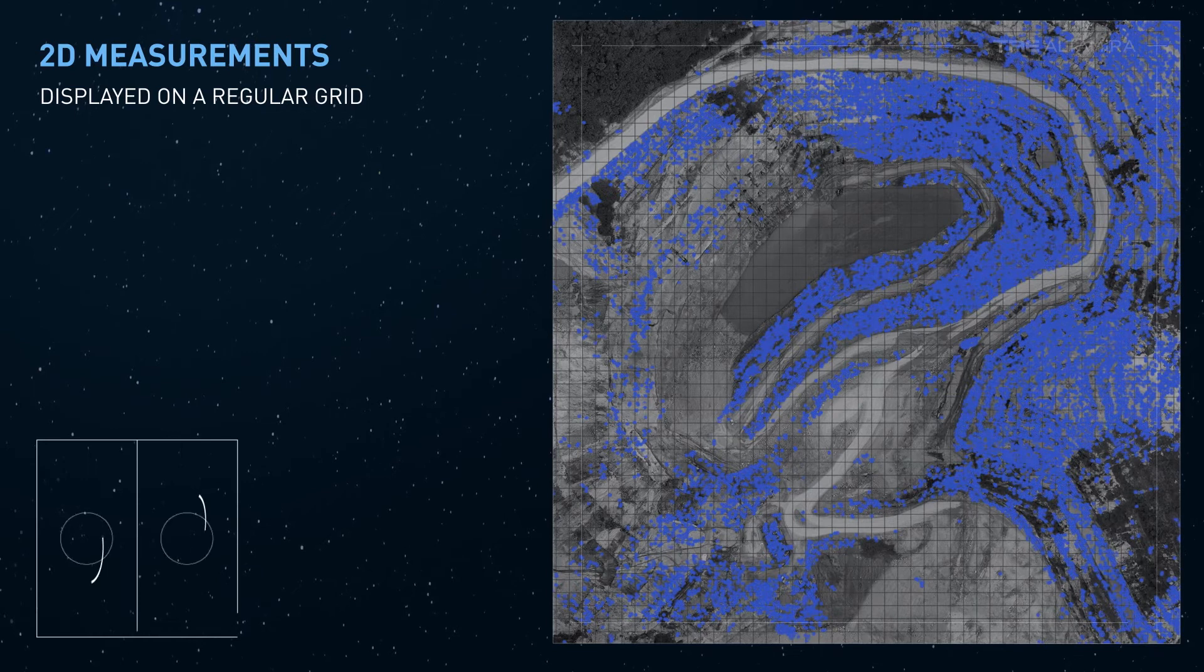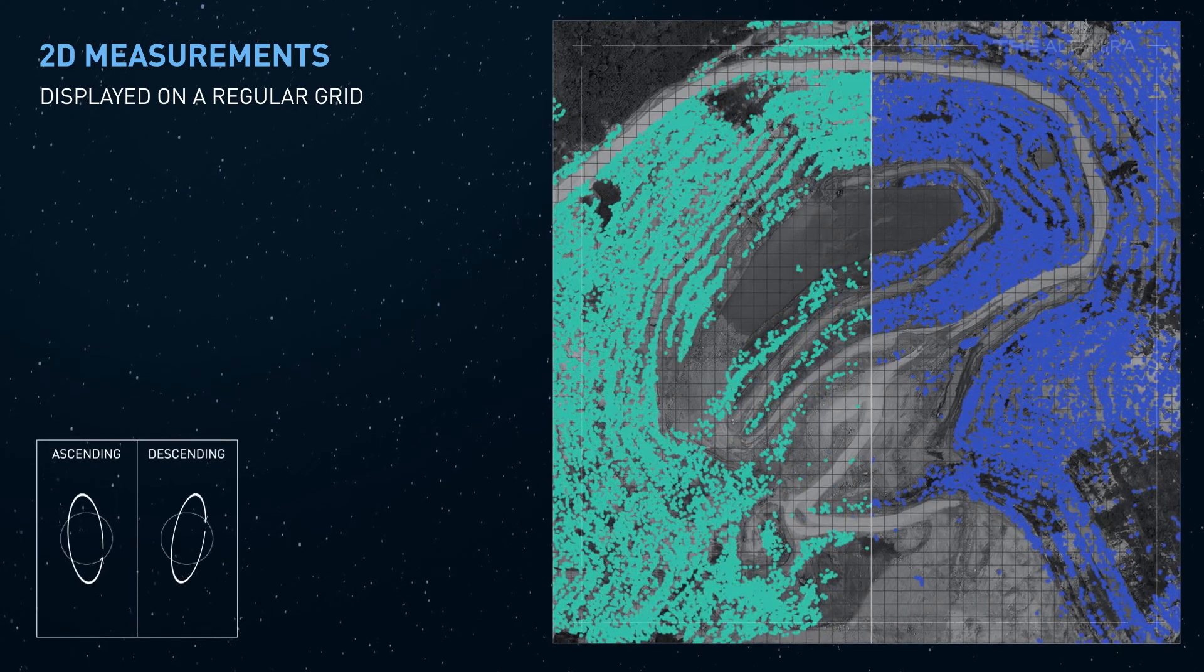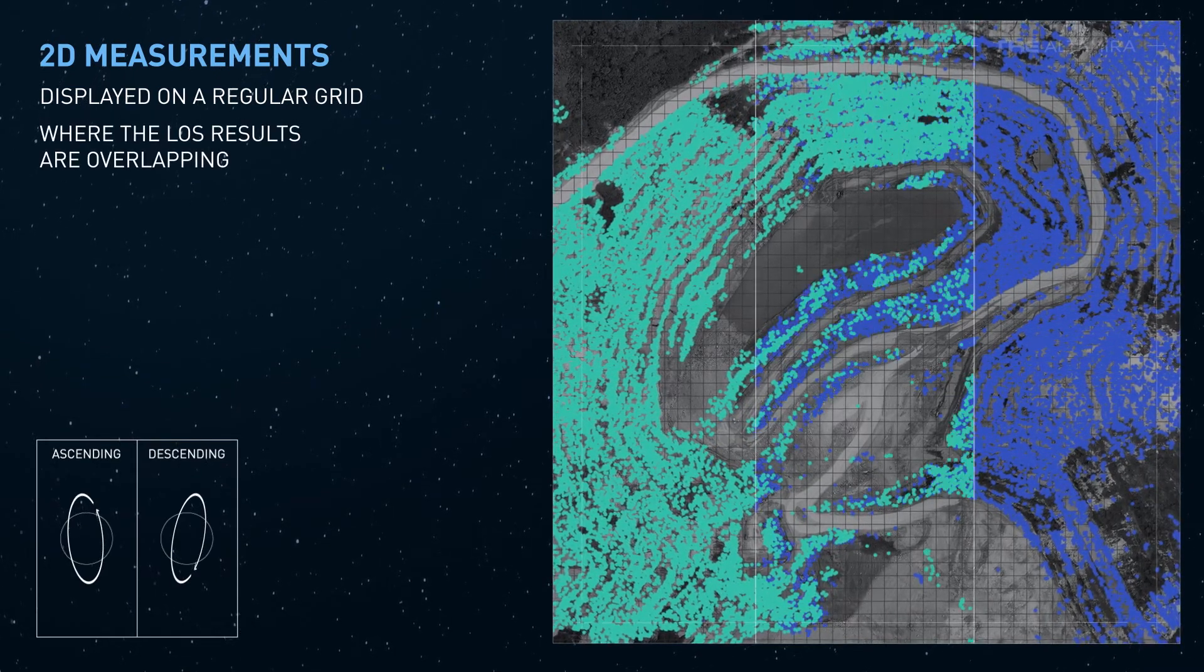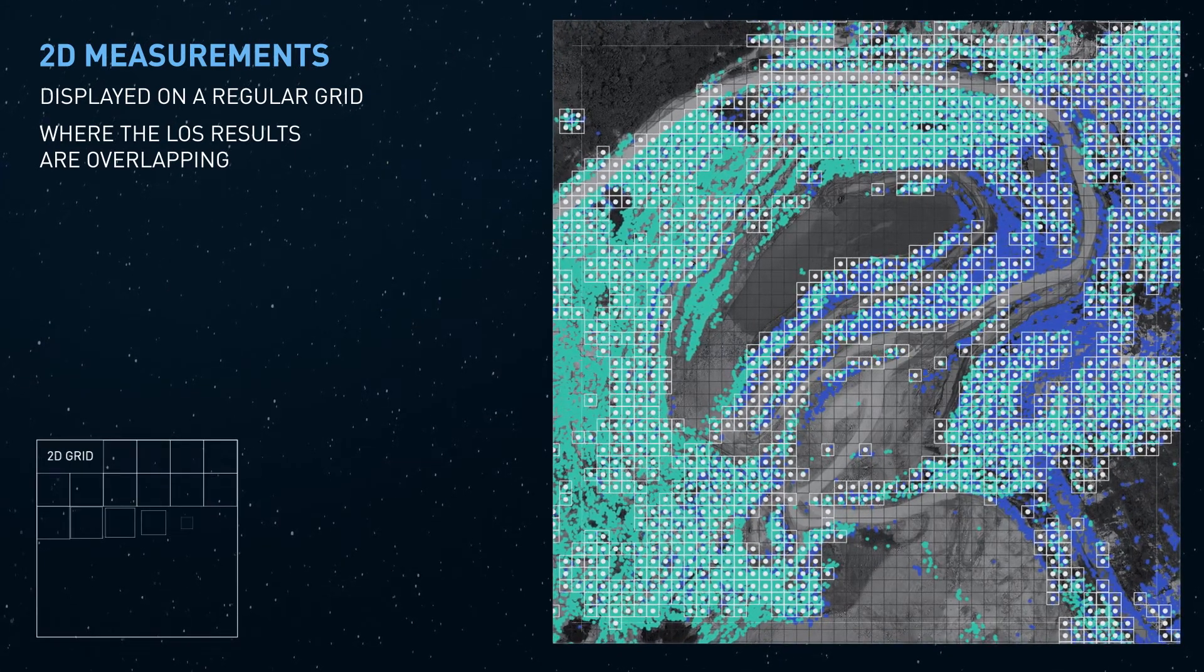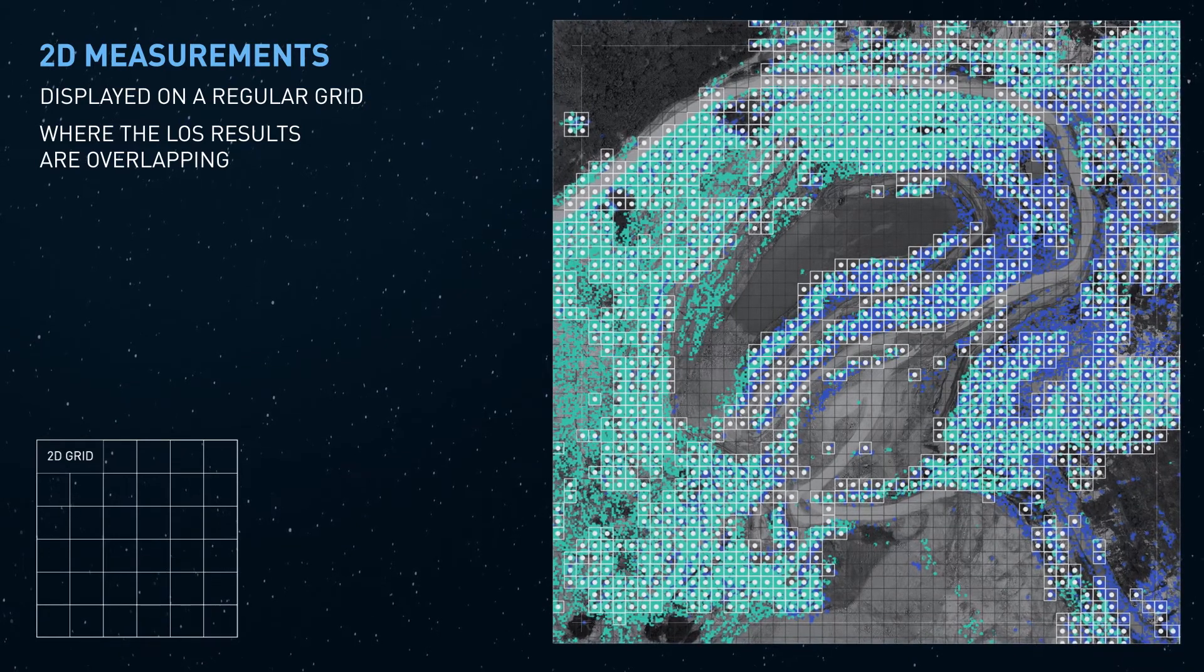2D measurements are displayed on a regular grid, where each point is the combination of the ascending and descending displacement data. Pixels with measurement points in only one geometry are not considered.